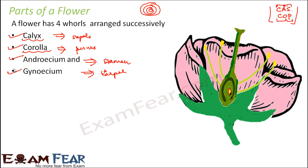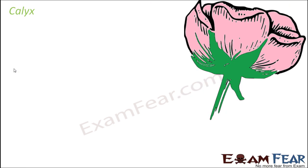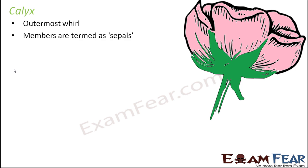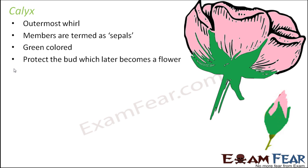We will discuss each of these whorls in a little more detail, starting with Calyx. Calyx is the outermost whorl; its members are termed as sepals — that is where the memory tip 'CaS' comes from. They are green in color and they protect the bud which later becomes a flower. The function of Calyx is most important when the flower is still in the form of a bud.